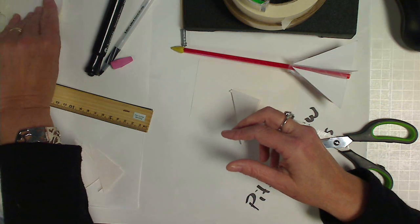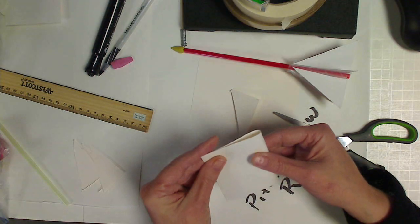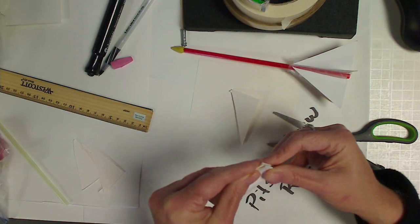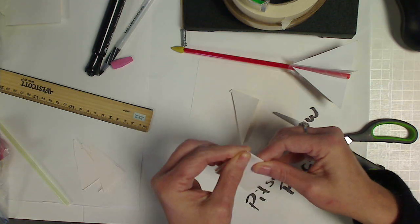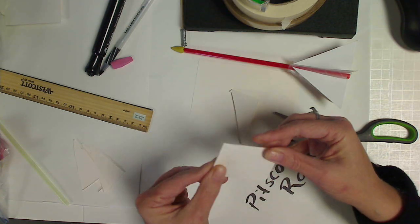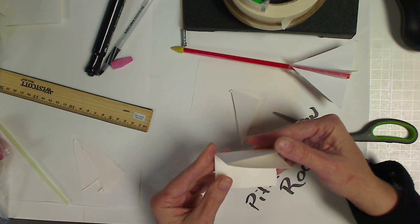Another way of doing this, again, fold in half, fold in half, and we do the opposite cut. Instead of cutting from this corner to this corner, we're going to cut from this corner to this corner.